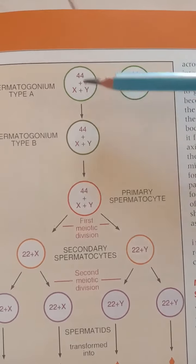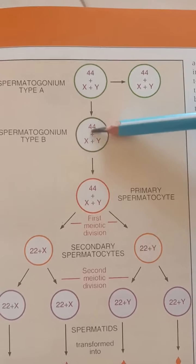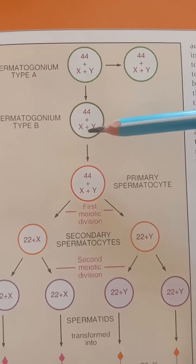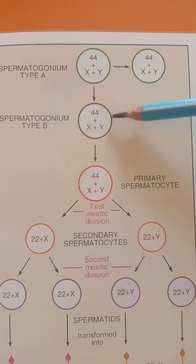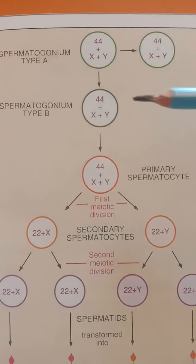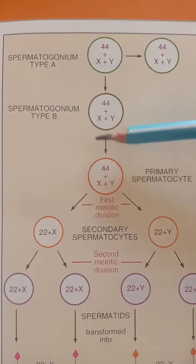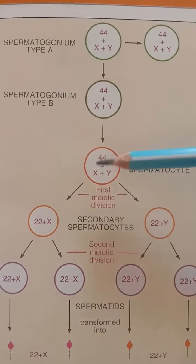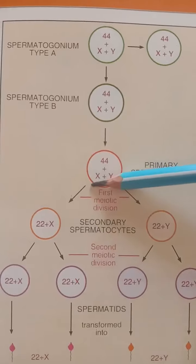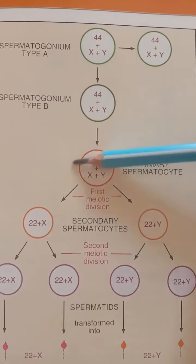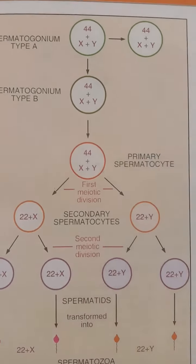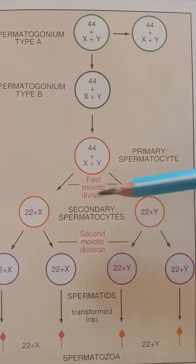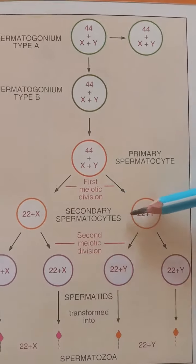Type A spermatogonia also gives rise to spermatogonia type B, which consists of the same 44 chromosomes plus X and Y sex chromosomes. The spermatogonia B, consisting of 44 autosomes and X and Y sex chromosomes — total 46 chromosomes — undergoes mitotic division to form the primary spermatocyte. Since it is a mitotic division, it consists of the same 44 autosomes plus X and Y sex chromosomes — 46 chromosomes in total. Then the primary spermatocytes divide, each forming two secondary spermatocytes in the first meiotic division.